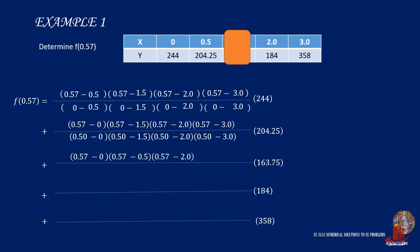The third term has 0.57 minus 0, followed by 0.57 minus 0.5, and 0.57 minus 2, skipping 1.5, then lastly 0.57 minus 3. X3, which is 1.5, will also be reduced by the similar subtrahends in the denominator.